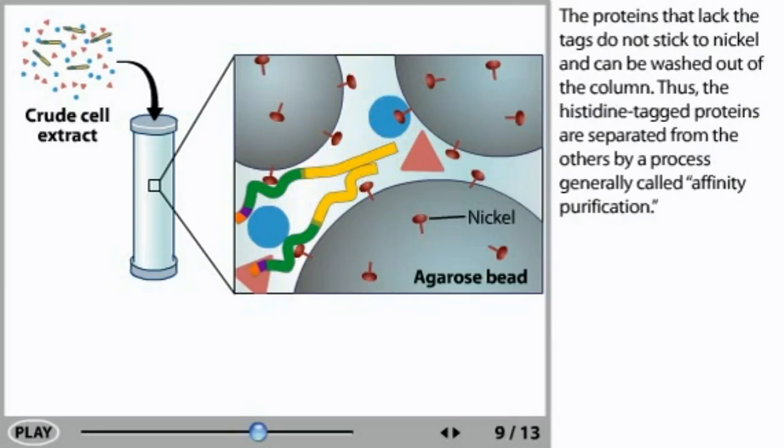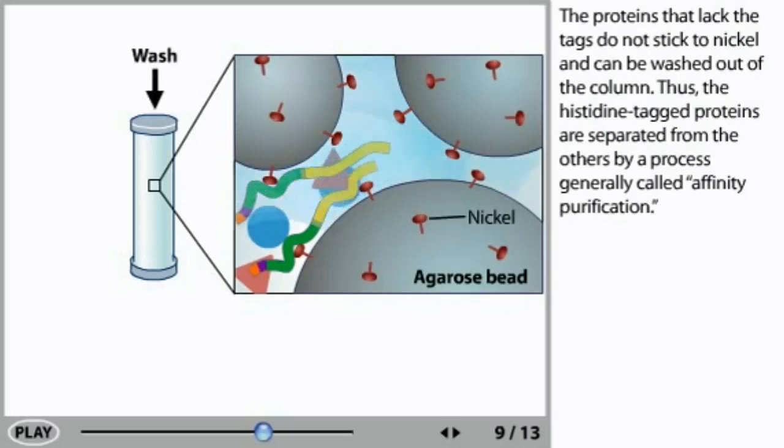The proteins that lack the tags do not stick to nickel and can be washed out of the column. Thus, the histidine tagged proteins are separated from the others by a process generally called affinity purification.